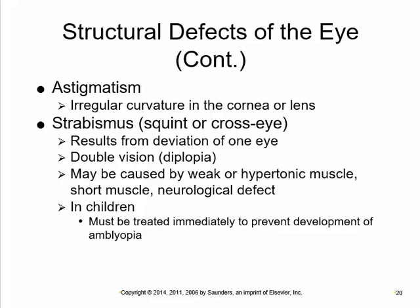Sometimes the cornea has an irregular curvature where the curve in the superior-inferior direction differs from the medial-lateral direction — that's called astigmatism. This irregular curvature means you can accommodate in one plane but not others, so as things move they change focus.